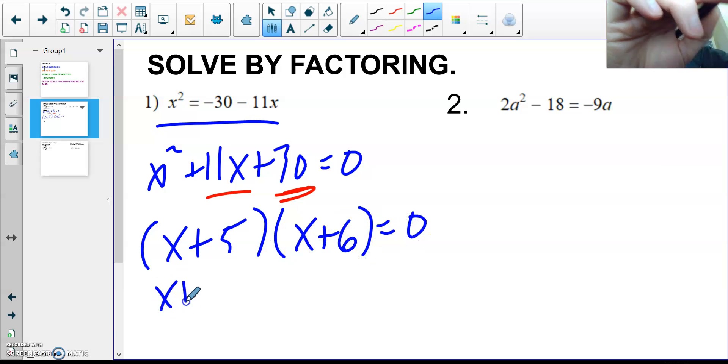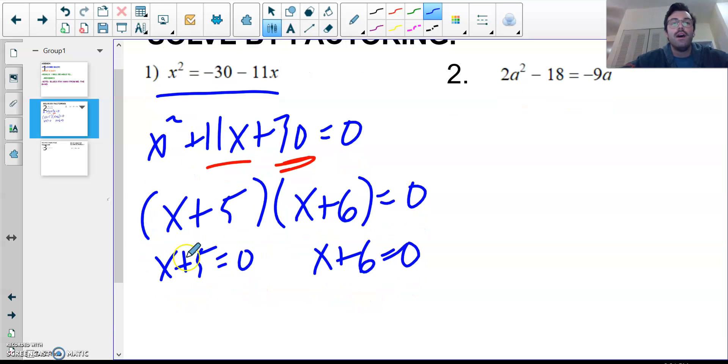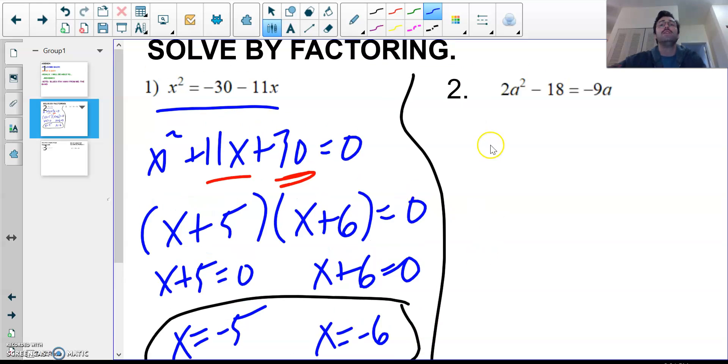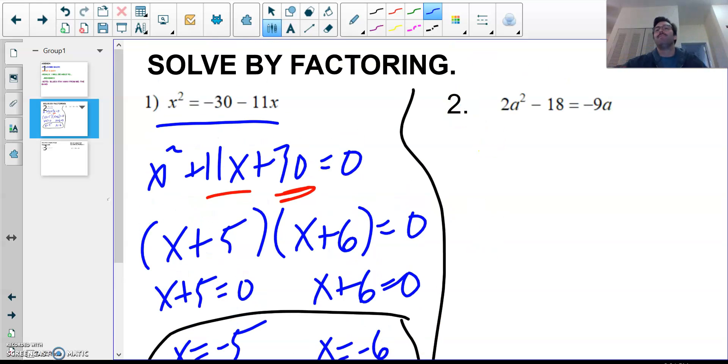And then, this step you might be, you'll probably be able to do in your head. I'm going to write it out anyway, for those of us that need it. X plus 5 equals zero. X plus 6 equals zero. Move the 5 over, so I get x equals negative 5 and x equals negative 6. That's it. Problem number one in the books. Wow, that was fast. Holy buckets. Here we go. Buckets are back. We are back. How about it?